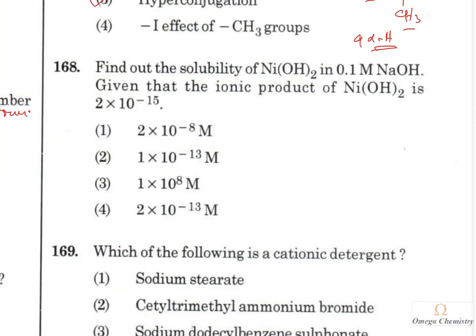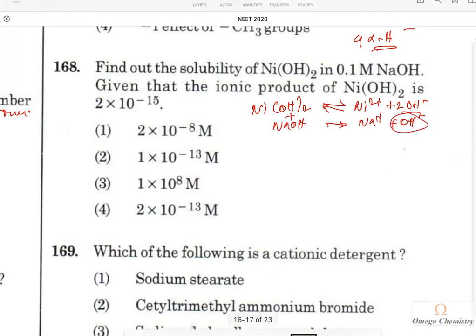Question 176: Find the solubility of nickel hydroxide in 0.1 M sodium hydroxide; Ksp of Ni(OH)₂ = 2 × 10⁻¹⁵. Ni(OH)₂ is a weak electrolyte: Ni(OH)₂ ⇌ Ni²⁺ + 2OH⁻. Sodium hydroxide is a strong electrolyte that completely ionizes, providing a high concentration of OH⁻. This common ion effect shifts the equilibrium to the left, retarding dissociation of Ni(OH)₂.